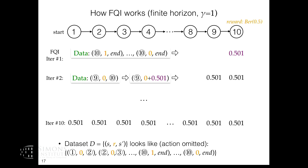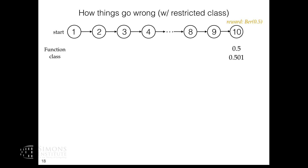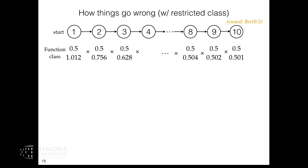This is working fine because this isn't actually the function approximation setting — we're allowed to make any prediction for any state. To mimic the difficulty of function approximation, in the next example I'll restrict the possible values the learner can predict for every single state. For state 10, the learner can only predict from two specific values; for state 9, two other values, and so on.